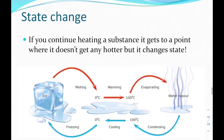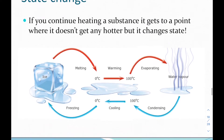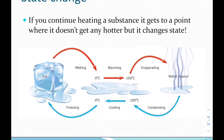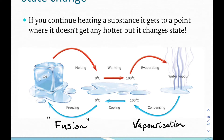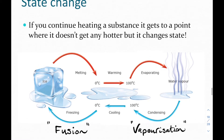There are a number of state changes. You could go from ice to water at zero degrees — that's melting — or water to water vapour at 100 degrees, that's evaporation. Or you could go in reverse: water vapour condensing back to liquid water at 100 degrees, or water changing to ice. The solid to liquid state change is referred to as fusion, and the liquid to gas state change is referred to as vaporization. It's very important that you know the difference.